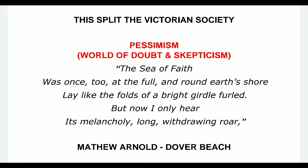Scientific progress and the development of a scientific temperament in society split the Victorian society into two halves. One half — the men who believed in science — could adapt to the scientific temperament as the new world order. The other half could not adapt to this new system and were still conservatives who believed in God. This split in Victorian society is best expressed in Victorian poetry — in Matthew Arnold in particular — showing a world of doubt and skepticism that scientific thought had triggered.